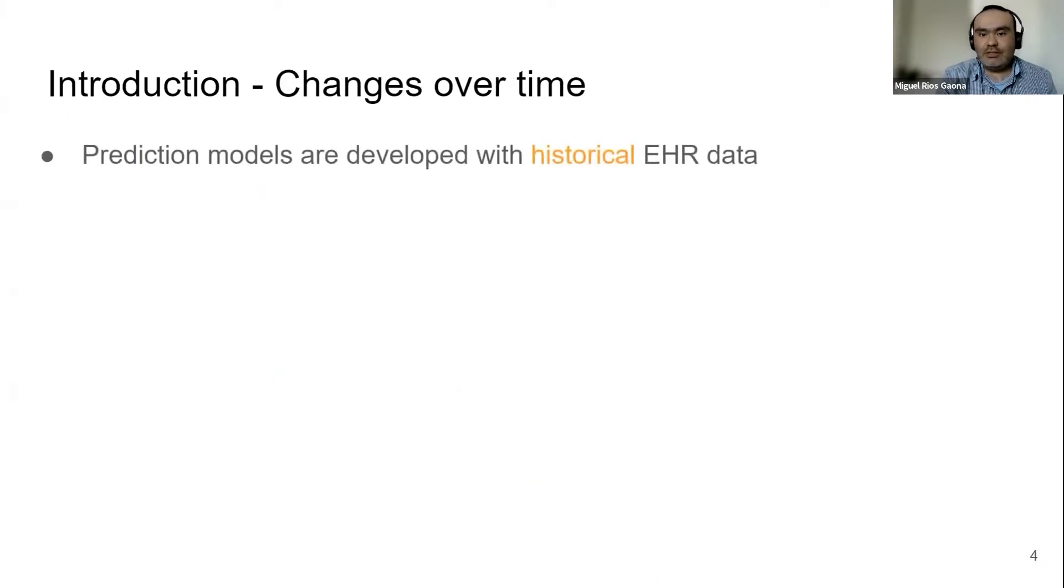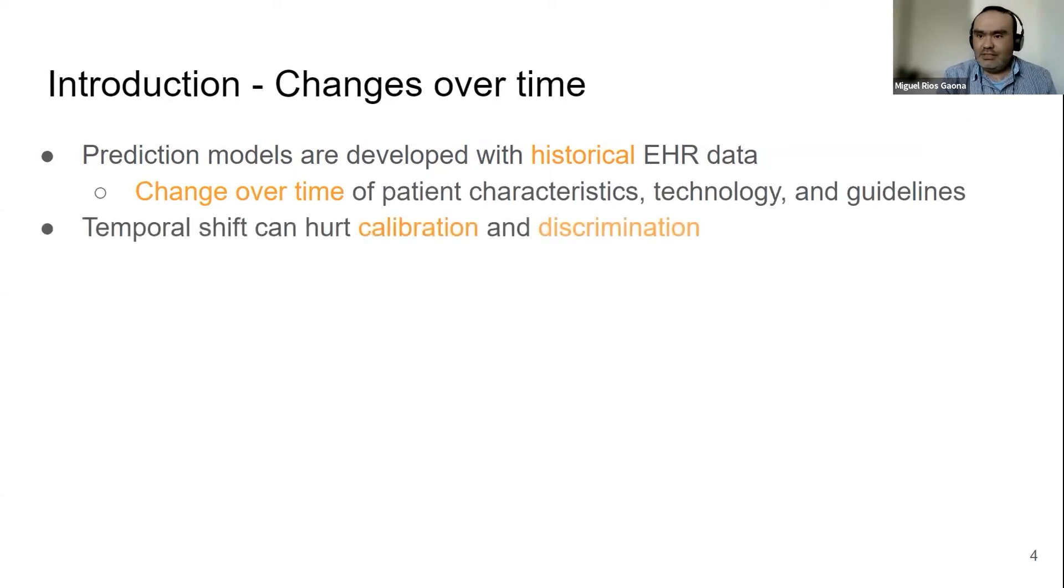However, these types of prediction models are developed with historical electronic health record data. And there are changes over time, so patient characteristics, technology, guidelines, etc., so that these temporal shifts can hurt calibration and discrimination.